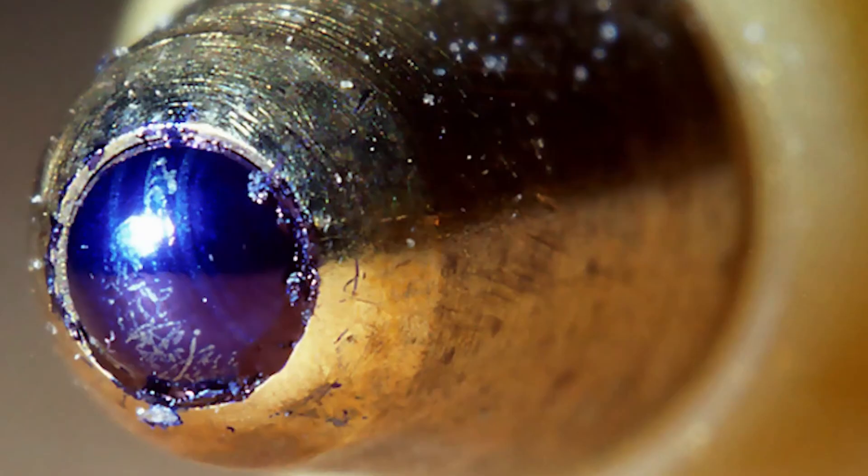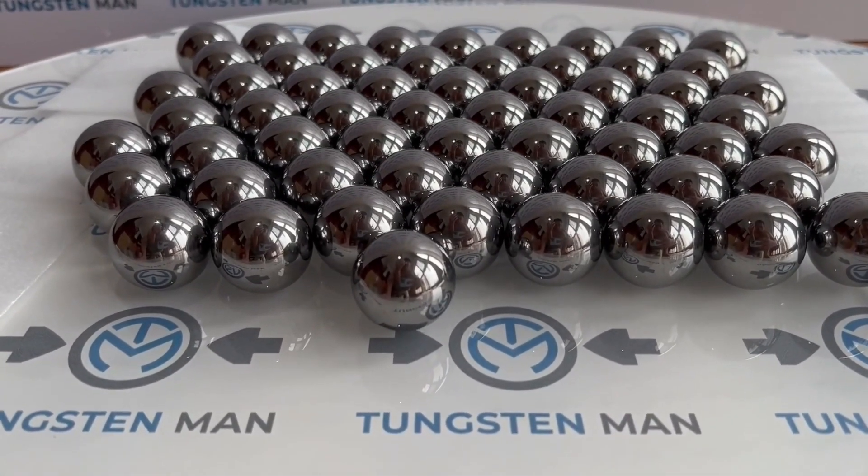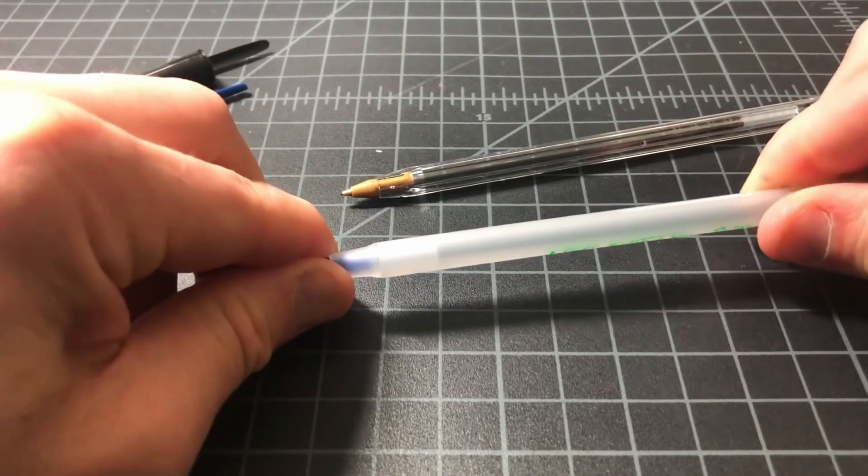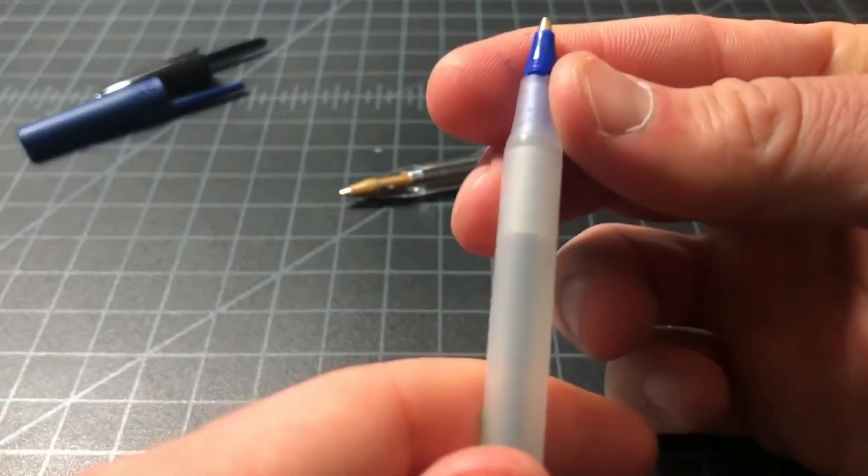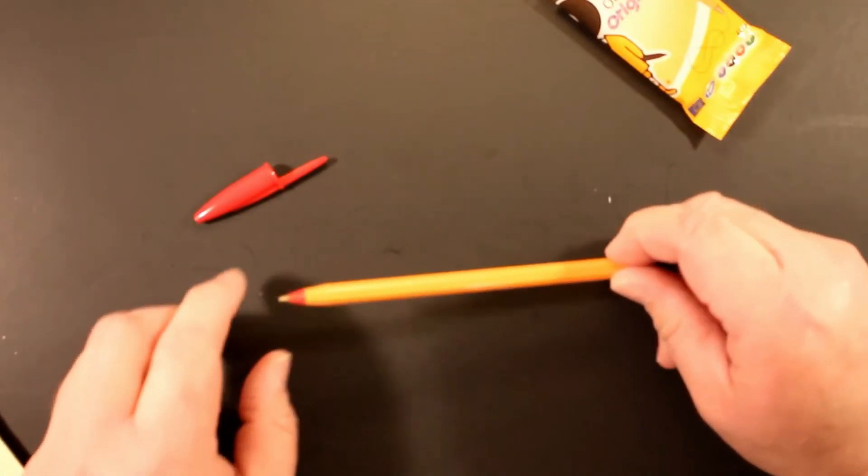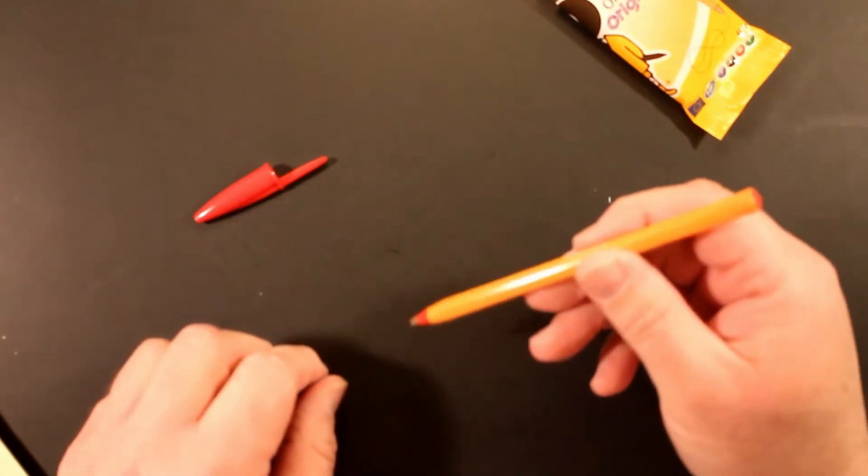The ball at the tip of a ballpoint pen is usually made of tungsten carbide, which is known for being very strong, long-lasting, and resistant to wear. Because it's strong and doesn't easily bend, tungsten carbide is perfect for the constant wear and tear of writing. This makes sure that the pen stays smooth and easy to use over time.